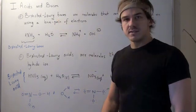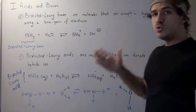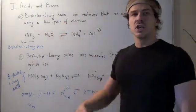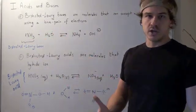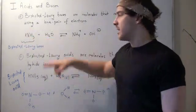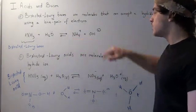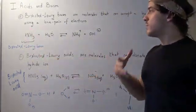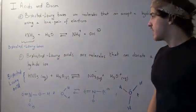Bronsted-Lowry bases are those molecules that can accept a hydride ion using a lone pair of electrons. Let's look at the reaction of ammonia and water. In ammonia, we have an extra pair of electrons, and this pair of electrons will take away an H ion from the water molecule, producing ammonium and hydroxide. Because ammonia has a lone pair of electrons, it acts as a Bronsted-Lowry base.